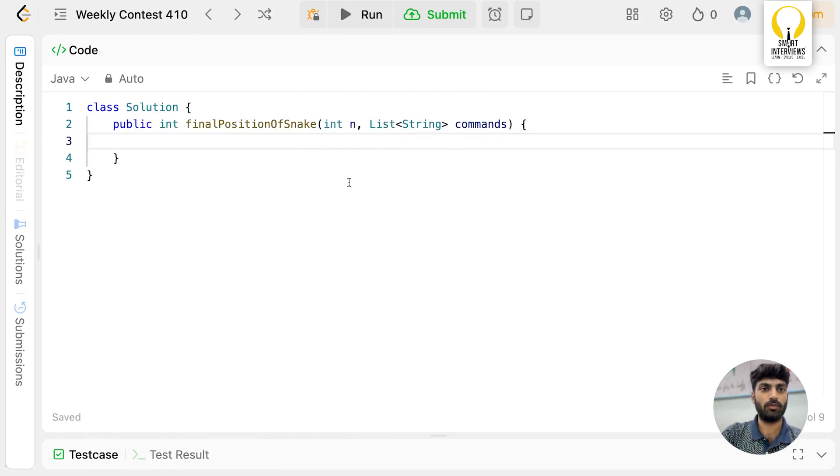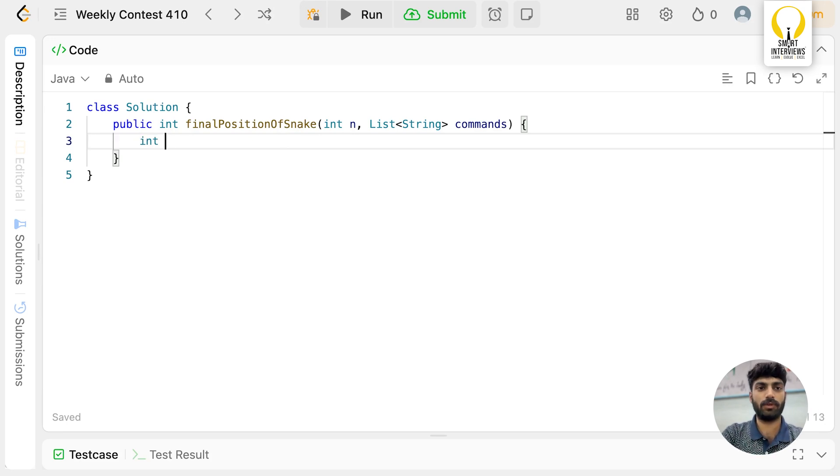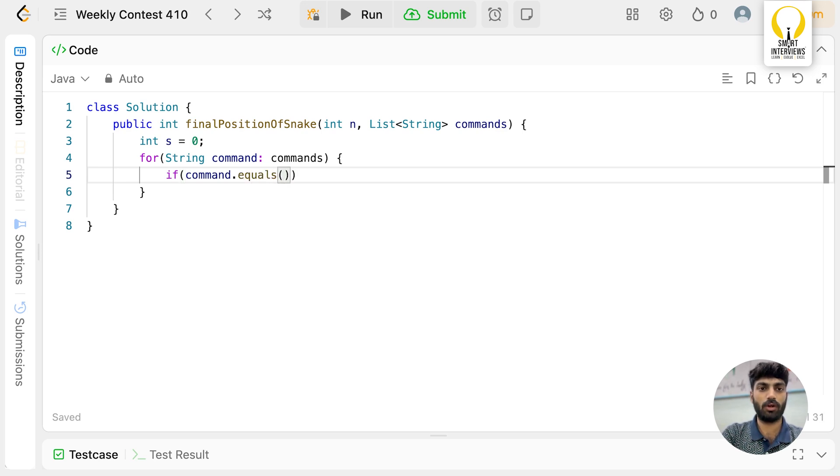Let's have the starting point. Then we'll iterate through the commands string array. I need to match each command with UP, DOWN, LEFT, and RIGHT. Since it's a string, we need to use .equals(). If it is UP, we need to subtract n.